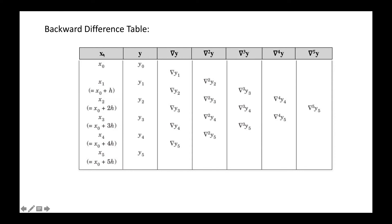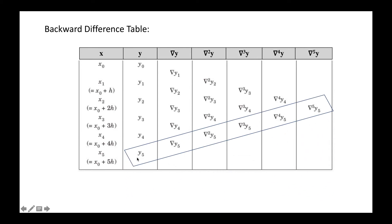For the backward difference table, data is given in tabular form from x₀ to x₅ in steps of h. With six points you can go up to fifth order differences. ∇y₁ = y₁ − y₀, ∇y₂ = y₂ − y₁, and so on; ∇²y₂ = ∇y₂ − ∇y₁, and so on. Use the backward difference formula when the value of x lies in the lower half of the table, taking the bottom values: y₅, ∇y₅, ∇²y₅, ∇³y₅, and so on.